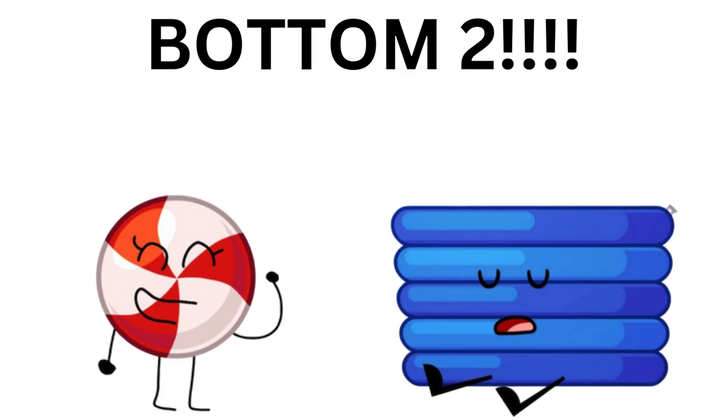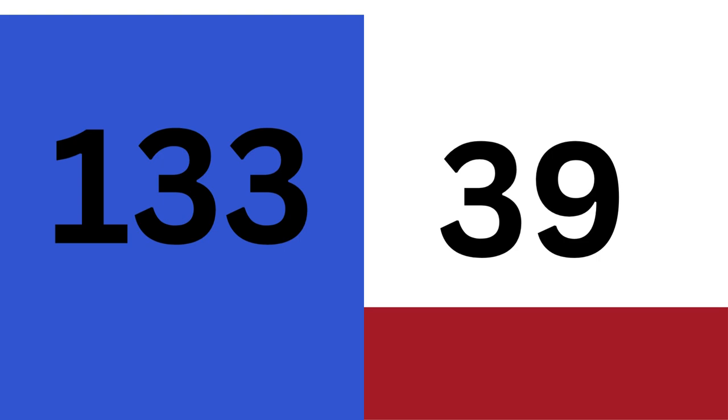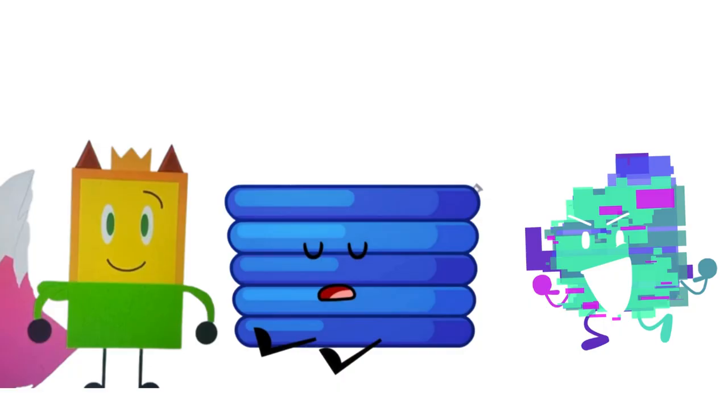And Candy, you're in the bottom two because people don't know much about you. But anyways, enough chit-chat. Let's reveal the votes. Pool, you have been eliminated with 133 votes. Wow, and I thought Beer Keg was hated. Anyways, Candy survives with 39 votes. Sorry, Pool, but you happen to be the first organically eliminated contestant. Sorry, buddy. It's time to go.